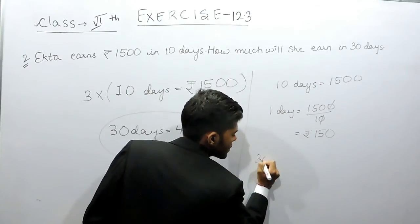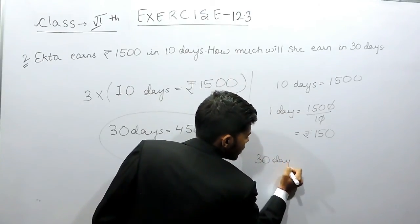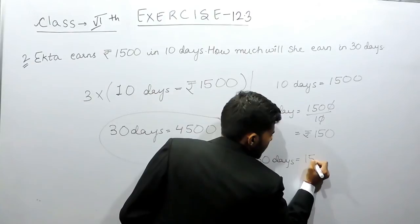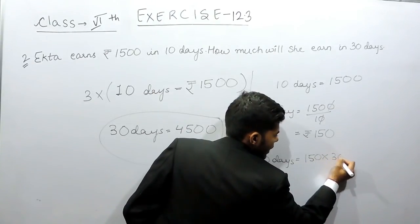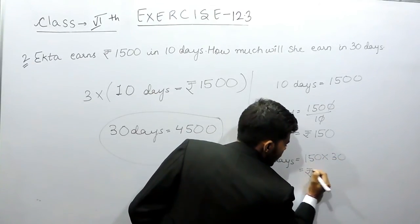So in 30 days she will earn 150 multiplied by 30, which equals 4500 rupees.